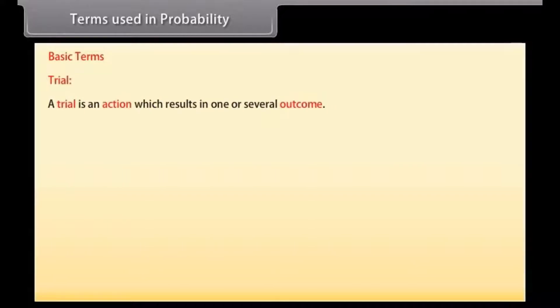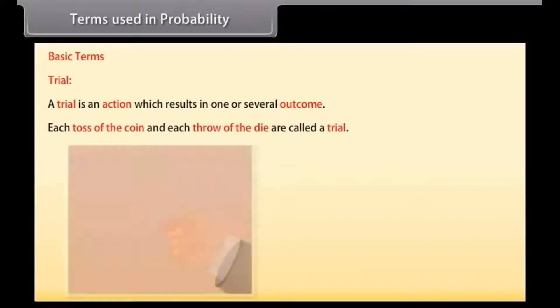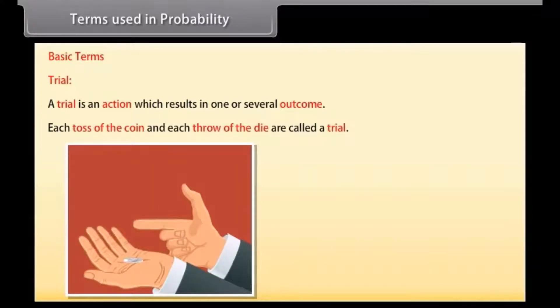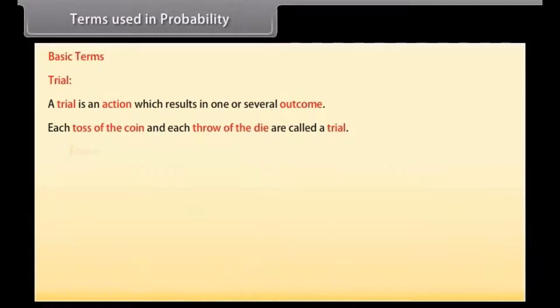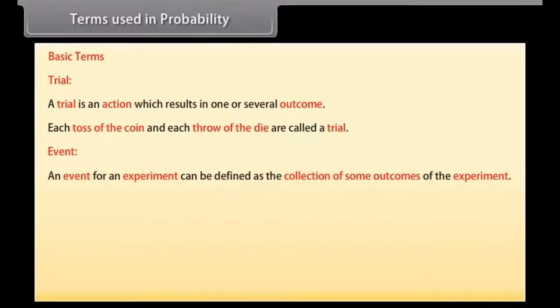Terms used in probability: before going further, let's learn about basic terms. Trial: a trial is an action which results in one or several outcomes. For example, each toss of the coin and each throw of the dice are called a trial. Event: an event for an experiment can be defined as the collection of some outcomes of the experiment.